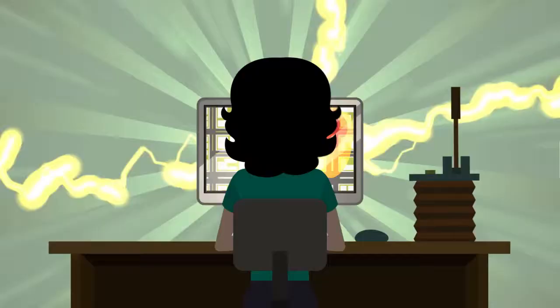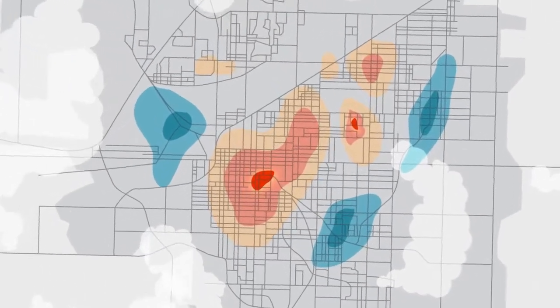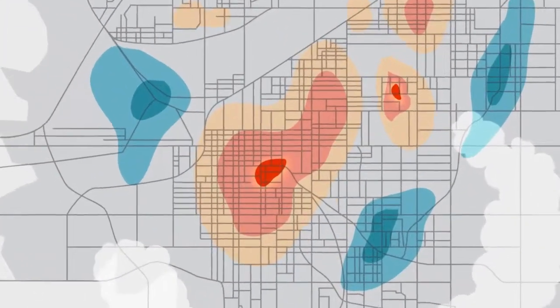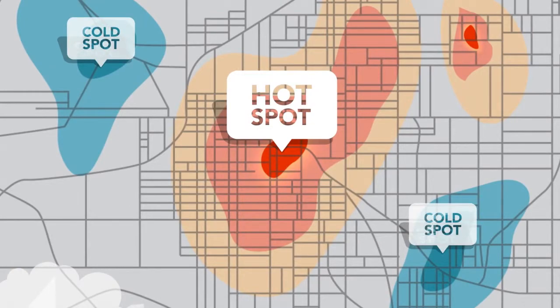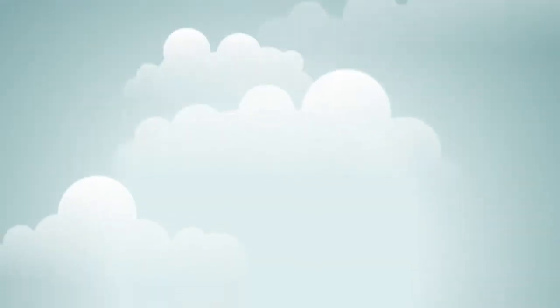This time, she's going to break out her secret weapon: the ArcGIS Find Hotspots tool. With the tool employed, the areas in red now expose hotspots or clusters of high numbers of crime. The areas in blue show cold spots or clusters of low numbers of crime.